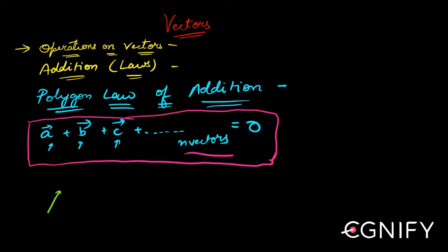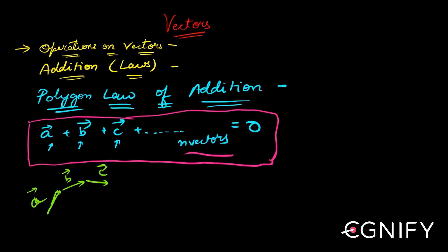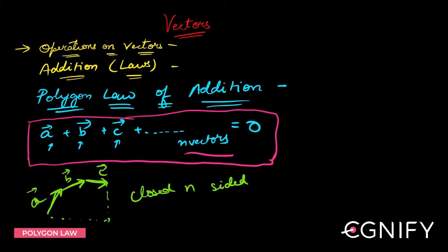All these vectors — a-bar, b-bar, c-bar, and so on — when you join them from head to tail, starting from the tail of the first to its head, then placing the tail of the next at that head, and so on for all vectors, what you will get is a closed n-sided polygon.